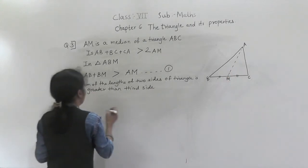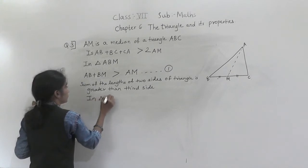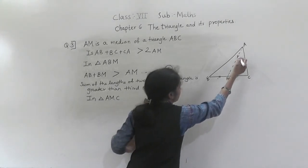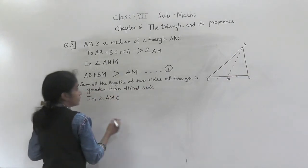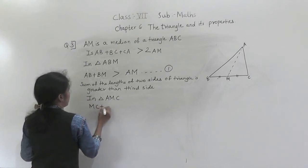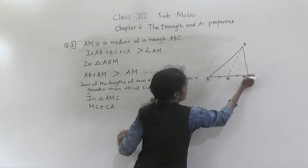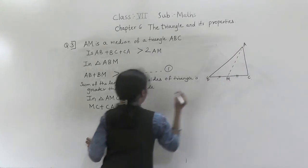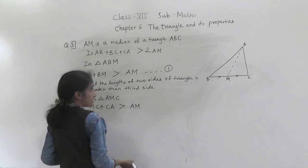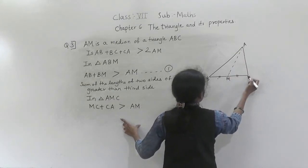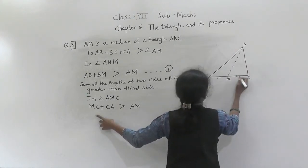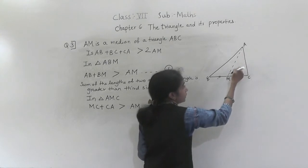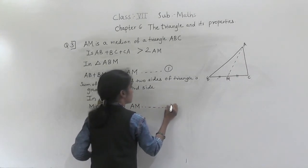Next, we take triangle AMC. In triangle AMC, MC plus CA is greater than AM — because the sum of the lengths of two sides of a triangle is greater than the third side. This is equation 2.